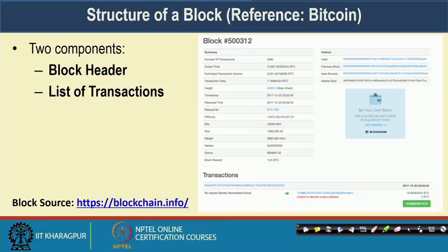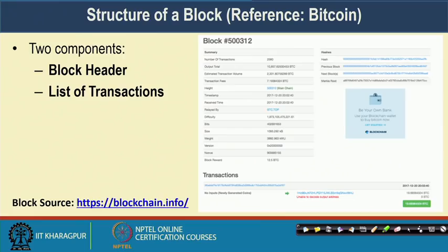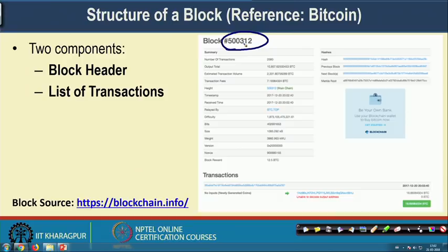Now let us look into the structure of a block. A block in Bitcoin has two components: the block header and the list of transactions. This example is taken from the website blockchain.info, where you can see the current blockchain used to realize Bitcoin money transfers. This is the information for block number 500312. The first part is the block header, and then there are a list of transactions — I have shown just one transaction here but there are many inside that block.